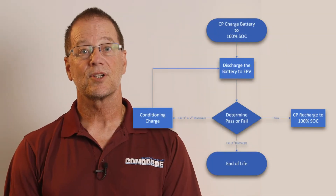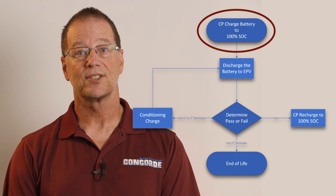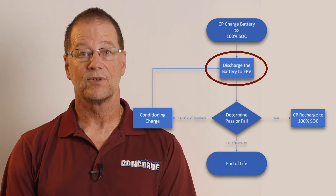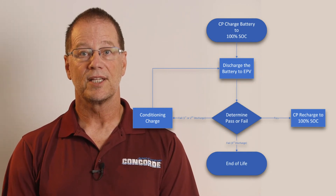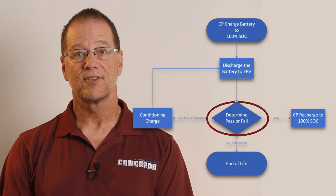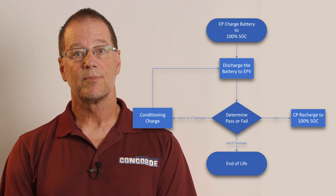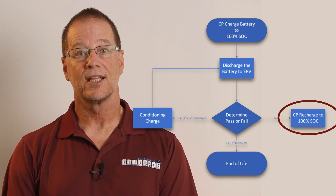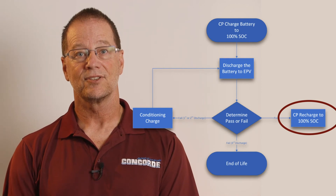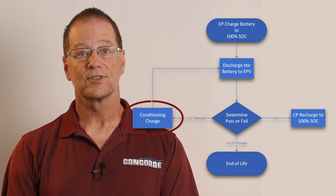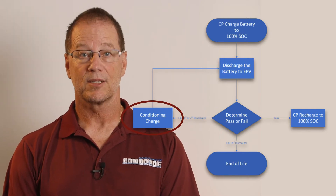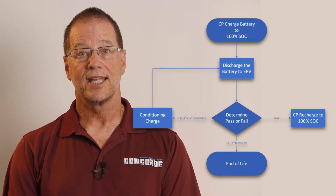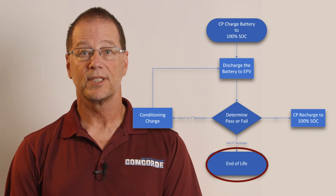First, the battery is charged at constant potential to 100% state of charge. Second, the battery is discharged at constant current to the endpoint voltage. Third, based on the measured discharge time, determine if the battery passes or fails. If the battery passes, recharge the battery at constant potential to 100% state of charge so it is ready for aircraft installation. If the battery fails, perform a conditioning charge and repeat the capacity test. If the battery does not pass after three discharge tests, it is considered end of life and should no longer be used.